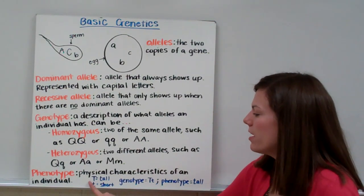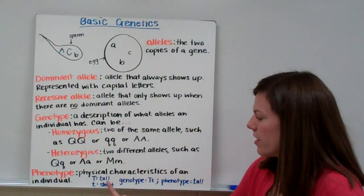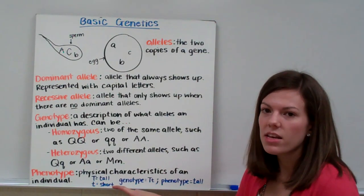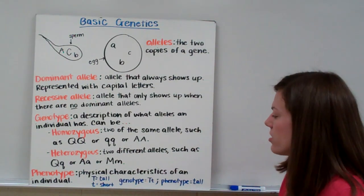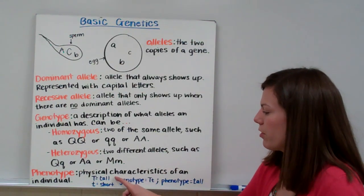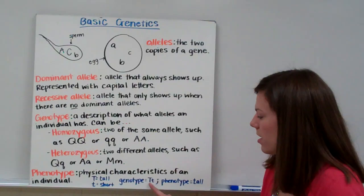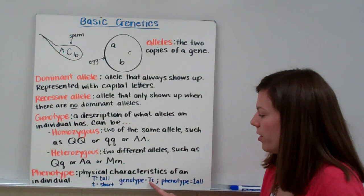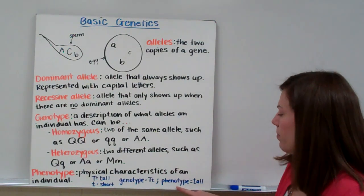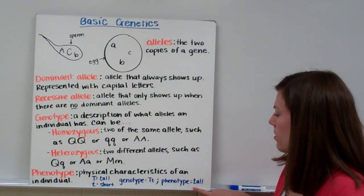For example, let's talk about plants. Big T is for tall — that's our dominant allele. Little t is for short — that's our recessive allele. Let's say your genotype is big T little t. You have an allele for tall and an allele for short. Since tall is dominant, the tall allele will show up and your phenotype will be tall. So your genotype is big T little t; your phenotype is tall.